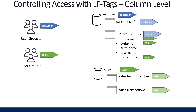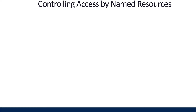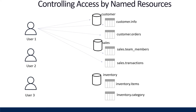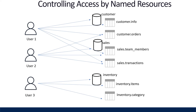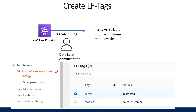Earlier I mentioned why LF tags are better than named resources. With named resources, for user group one you'd have to individually specify access to customer info, orders, team members, and transactions tables, then create separate permissions for each database, and also delineate the customer orders table. Since there's nothing inherent on the tables or columns themselves, revoking access to specific tables becomes more challenging — you have to remember which principals have access to which tables. This is a simple example with just three users, but imagine hundreds of users in your AWS account; you can see how it quickly becomes complicated to manage all these permissions.